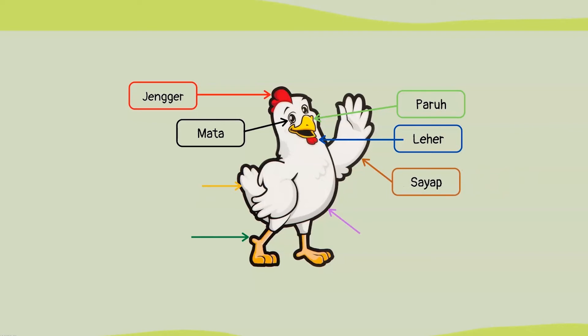Selanjutnya ada sayap. Sayap ini memiliki fungsi sebagai alat keseimbangan pada ayam. Sayap ini akan dikepakkan untuk menjaga keseimbangan tubuhnya, baik pada saat ayam bergerak, turun, ataupun lompat dari suatu tempat. Lalu ada ekor ayam, yang berfungsi juga untuk menjaga keseimbangan seperti layaknya sayap.